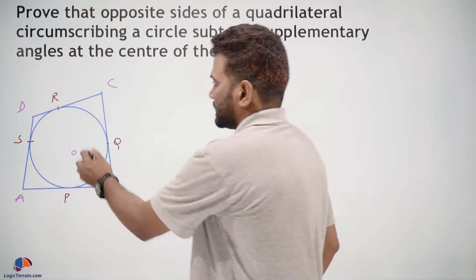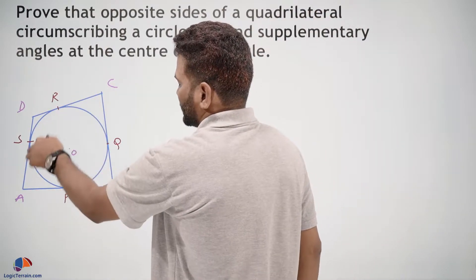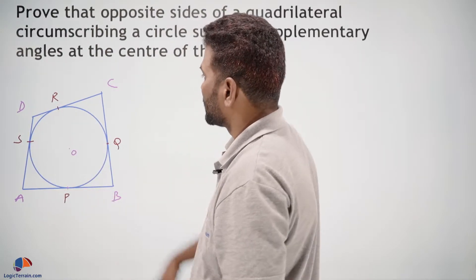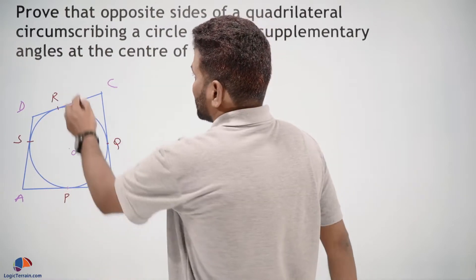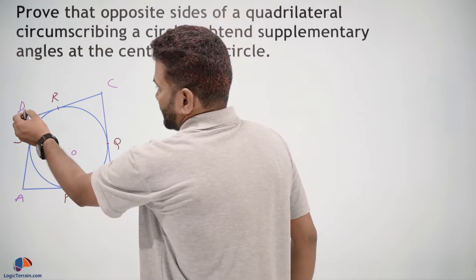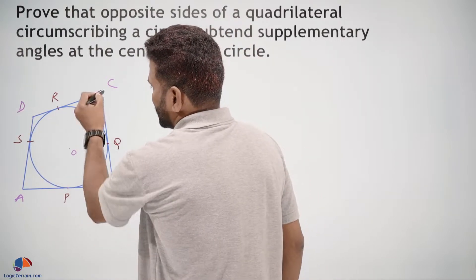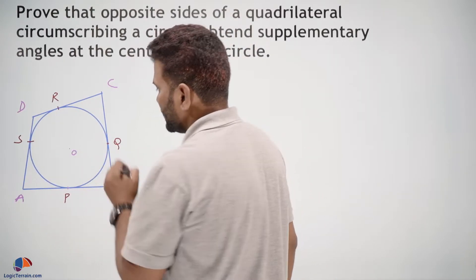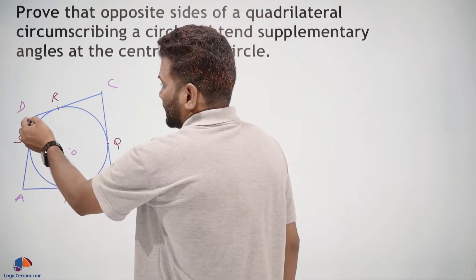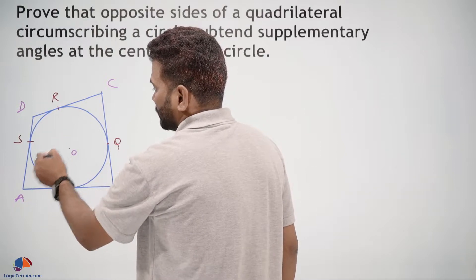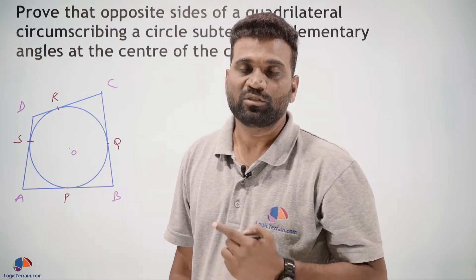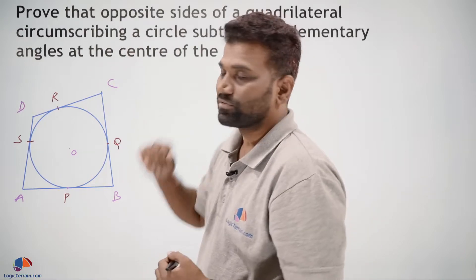Here there is a quadrilateral circumscribing a circle with center O. Opposite sides of this quadrilateral subtend supplementary angles at the center, which means angle DOC plus angle AOB must be equal to 180 degrees, and angle DOA plus angle COB must also be equal to 180 degrees. That is what we need to prove.